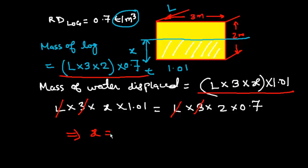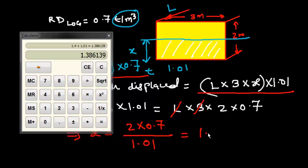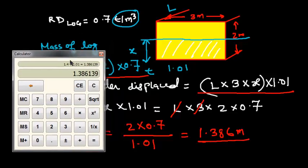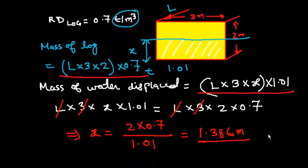After cancelling, we get X = (2 × 0.7) / 1.01. Calculating: 2 × 0.7 = 1.4, divided by 1.01 gives X = 1.386 meters. So the draft in water of RD 1.01 is 1.386 meters.